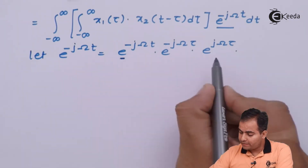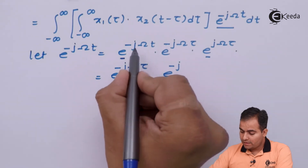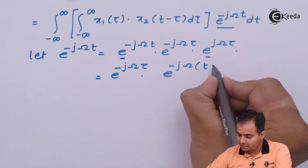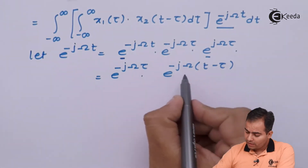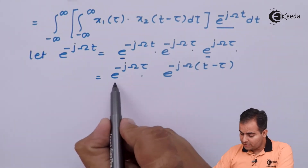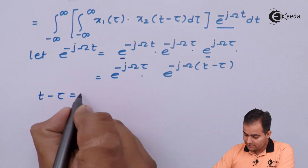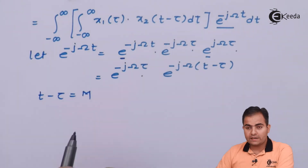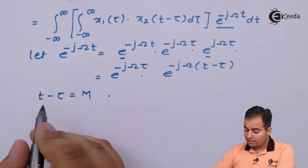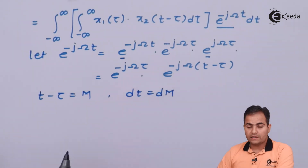I am going to add these two exponent functions, giving minus jωτ, and this whole term is represented by t minus τ. Now, t minus τ is considered as m. If I differentiate, these two are the variables and t is a constant, so after differentiation we can write dt equals dm.